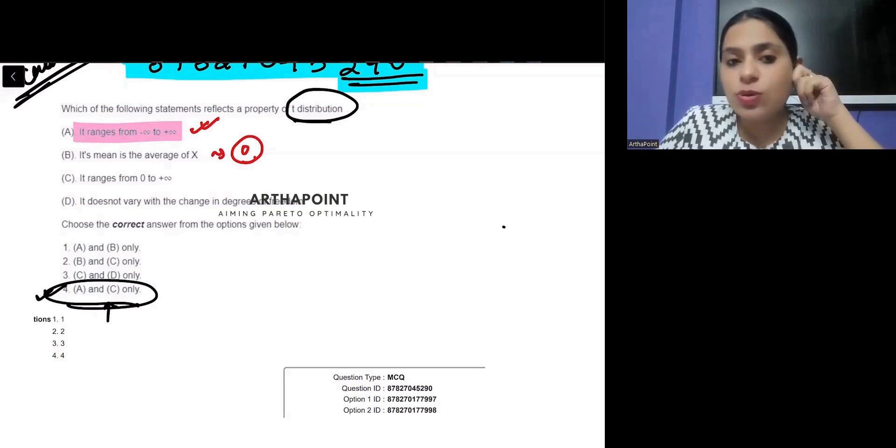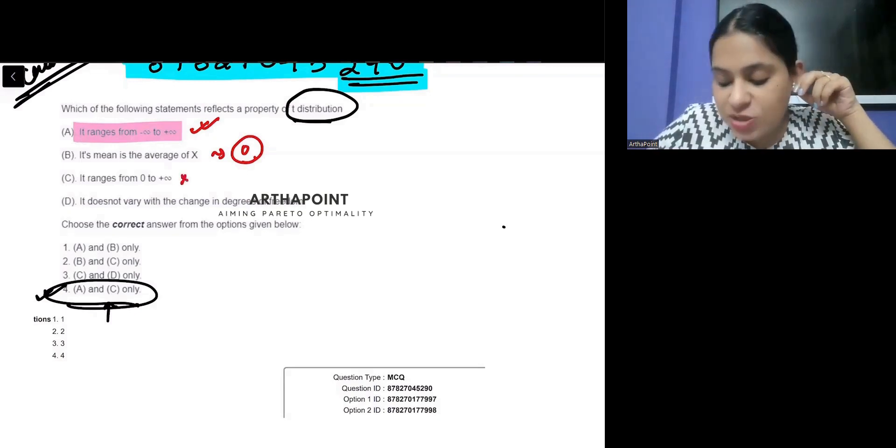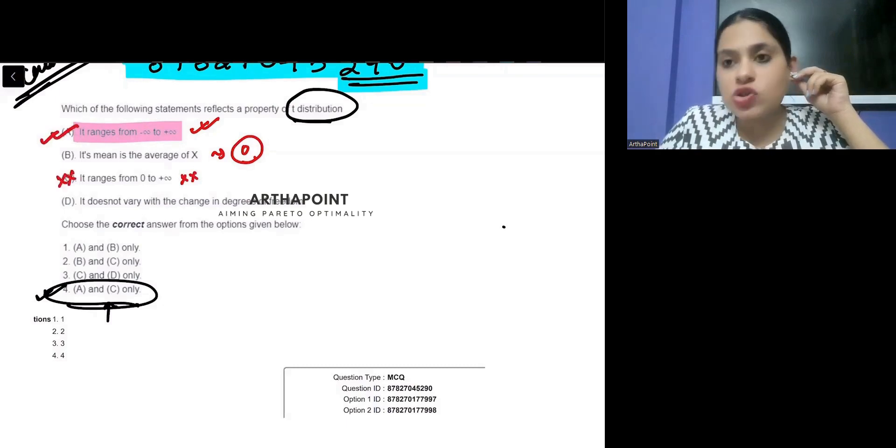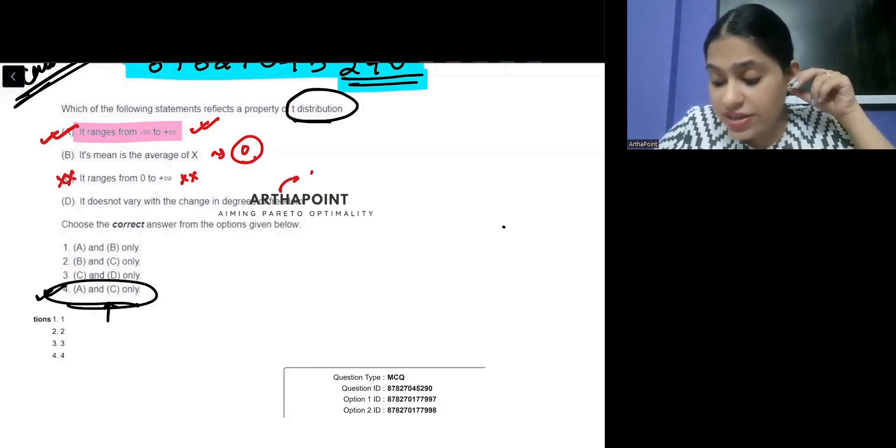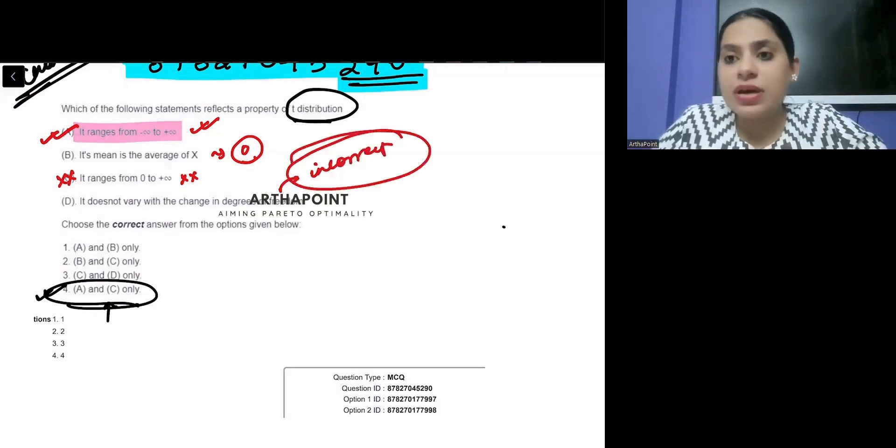It ranges from 0 to infinity. The moment A is correct, C becomes incorrect. So, this is also incorrect. And it does not vary with changes in degree of freedom which is incorrect option. It changes as the degree of freedom changes.